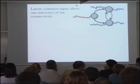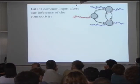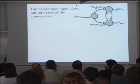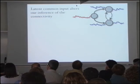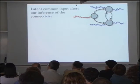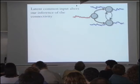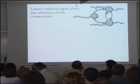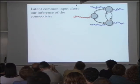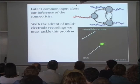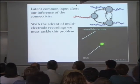The problem is that latent common inputs alter our inference of connectivity. In any recording in neuroscience, we'll always have neurons we're not recording from. Those neurons might project onto the neurons we are recording from, and may induce correlations in the responses of our recorded neurons. We might infer that as direct connectivity, when in fact it's only due to shared common input. We believe this is a major problem that needs to be solved, and with the advent of multi-electrode recordings, we must tackle it.